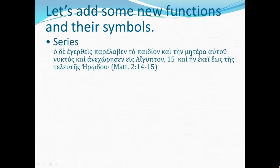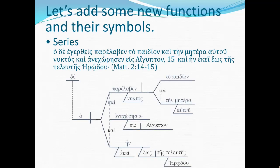Now here in part five, let's add some new functions and their symbols. First, the series function. Here's an example from Matthew 2 verses 14 and 15. Translated fairly literally: And he having arisen took along the child and his mother by night, and he departed into Egypt, and he was there until the death of Herod. In diagram form, let's first notice this short series consisting of two objects — the child and his mother.